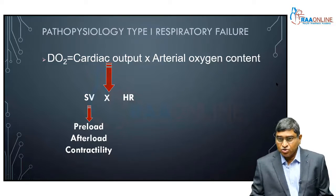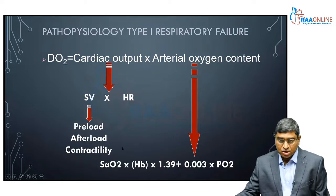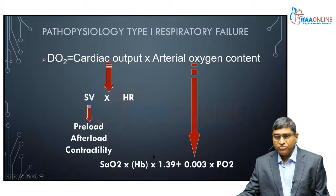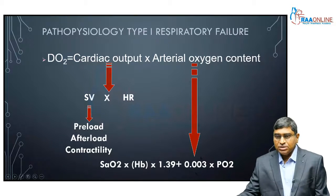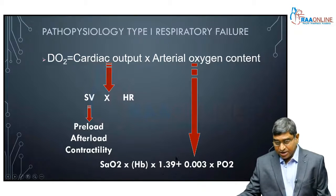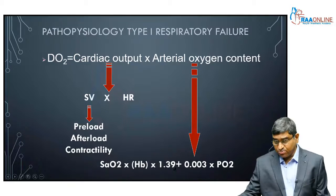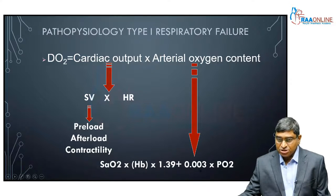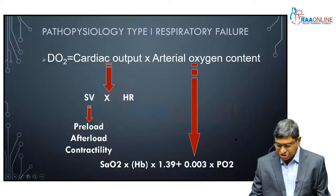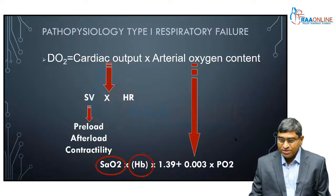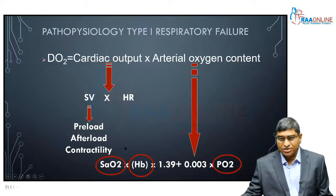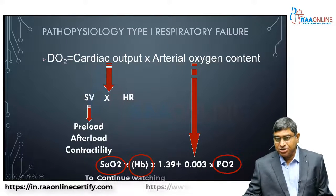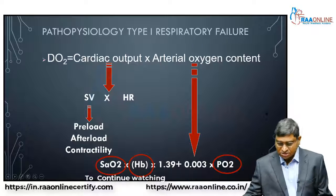Arterial oxygen content depends upon oxygen saturation, the amount of hemoglobin available, and the PO2. We cannot change the fixed constants — the amount of oxygen carried by one gram of hemoglobin is 1.39 mL, and the amount of oxygen in solution is also fixed. What we as clinicians can change is the saturation, the amount of hemoglobin available, and the PO2. These are the factors we can modify to increase arterial oxygen content.